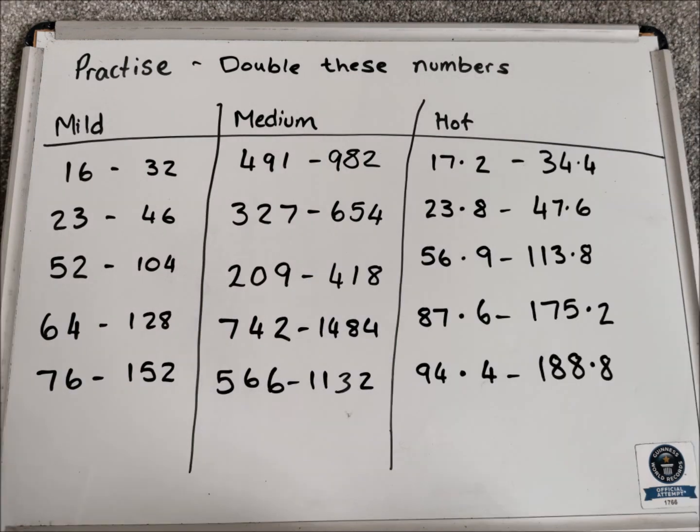Onto the hot answers: double 17.2 is 34.4, double 23.8 is 47.6, double 56.9 is 113.8, double 87.6 is 175.2, and double 94.4 is 188.8. Well done if you got those correct. If you made mistakes, go back and have another practice — take care when adding up each section, as that's likely where errors come in.